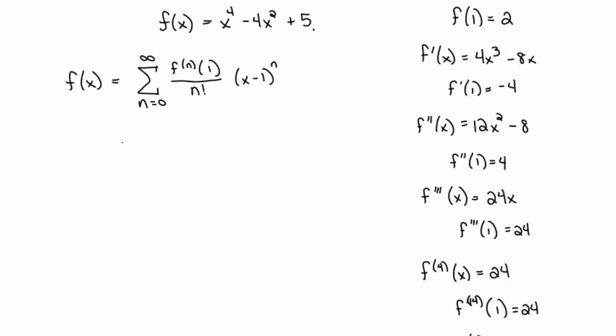All right, so let's plug these in. This is equal to, when n is equal to zero, I get the zeroth derivative, or the value of the function at one, which we said is two, over zero factorial times x minus one to the zeroth. Plus the first derivative evaluated at one, which is negative four, over one factorial x minus one to the first, plus the second derivative evaluated at one over two factorial times x minus one squared.